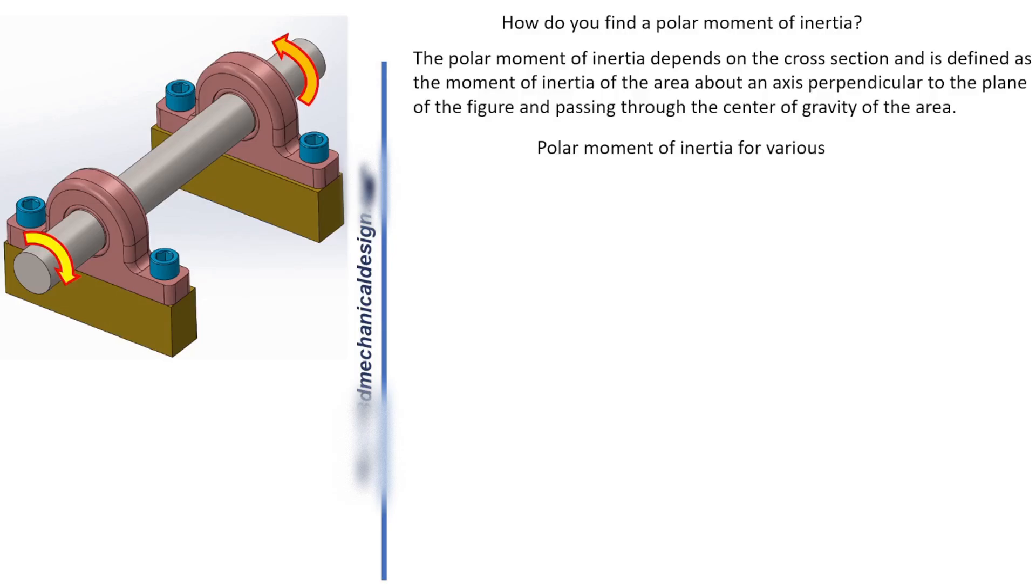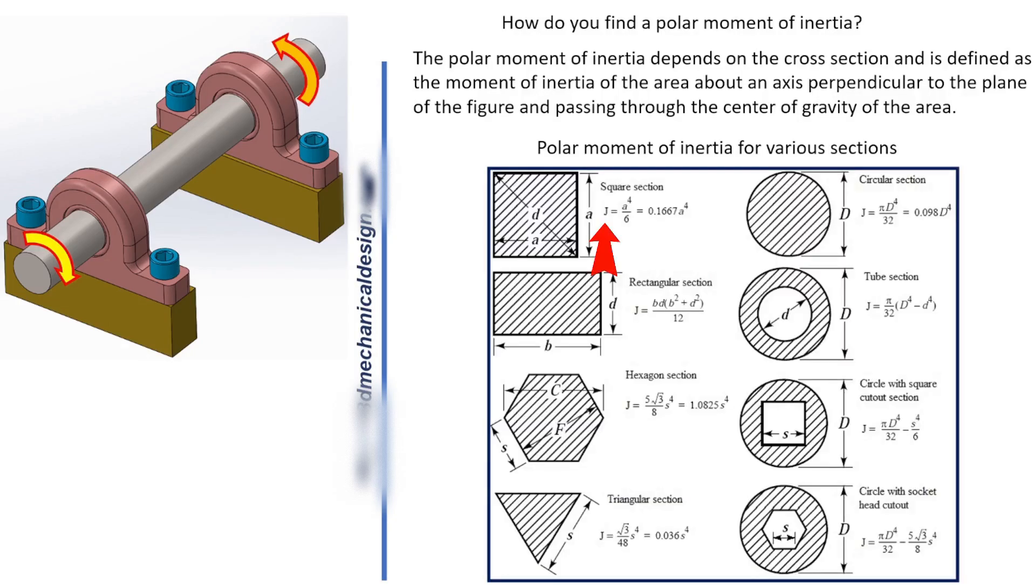Polar moment of inertia for various sections: Square section, Circular section, Rectangular section, Tube section, Hexagon section.